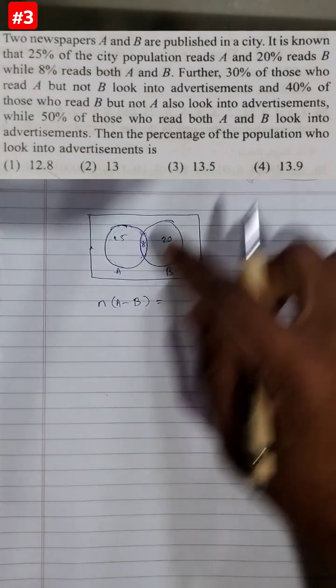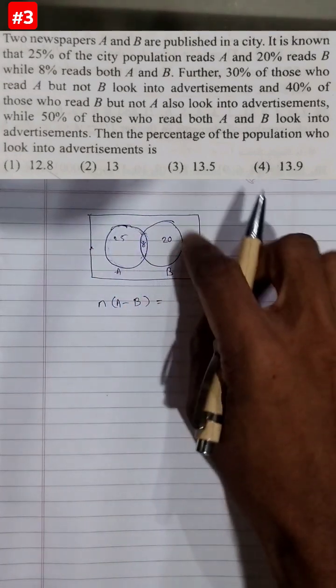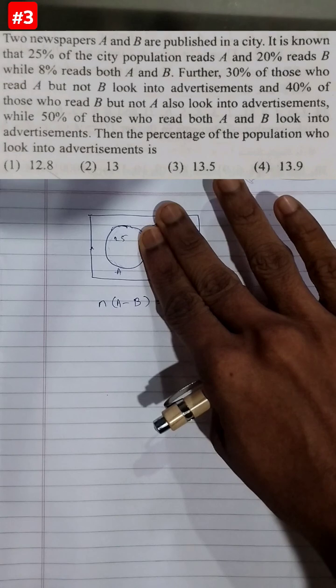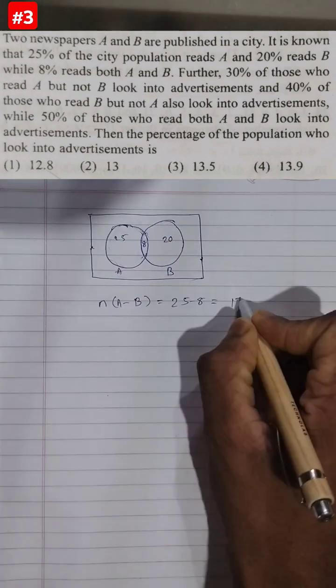So we are taking A minus B. That is, from this entire A, we are cutting the B out, so we will be cutting that 8 portion also. So what is the remaining area? 25 minus 8, which is 17.